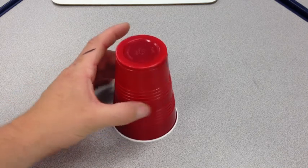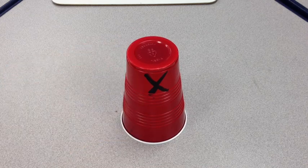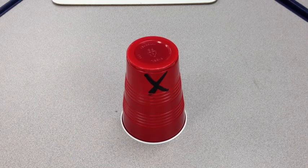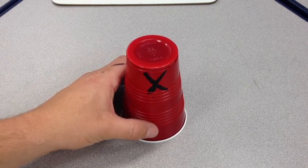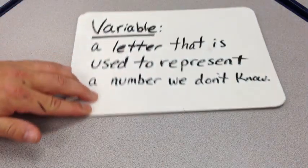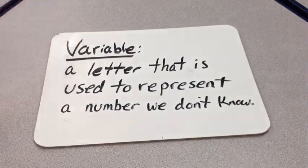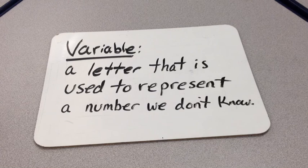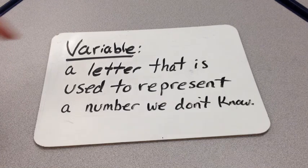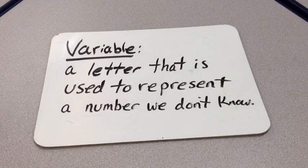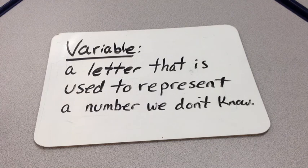The answer we're going to give them is a letter. We're going to say, there are x dice in this cup. Now, why are we doing that? We're doing it because a variable, by definition, is a letter. We don't know the number, but we're going to use a letter to represent the number that we don't know. So we can at least say, there's x amount of dice in there.